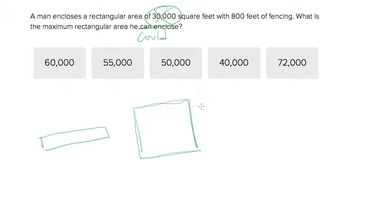So if the perimeter is 800 and we're making a square, then a side is 800 over 4, which is 200. The area equals side times side, which is 200 squared, which is 40,000.